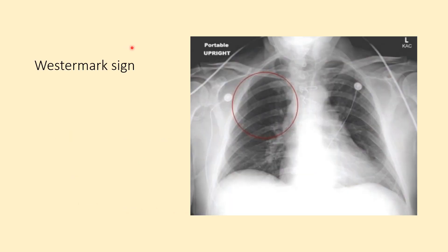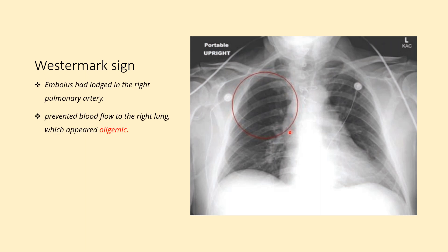One of the signs to be discussed is the Westermark sign. This is an X-ray of a patient suspected of pulmonary embolism. An embolism was lodged in the right main pulmonary artery — you can see it enlarged. As a result, there was decreased blood flow in the right upper zone, and so a lucency was seen with features of oligemia. This sign is known as the Westermark sign, or decreased vascularity.